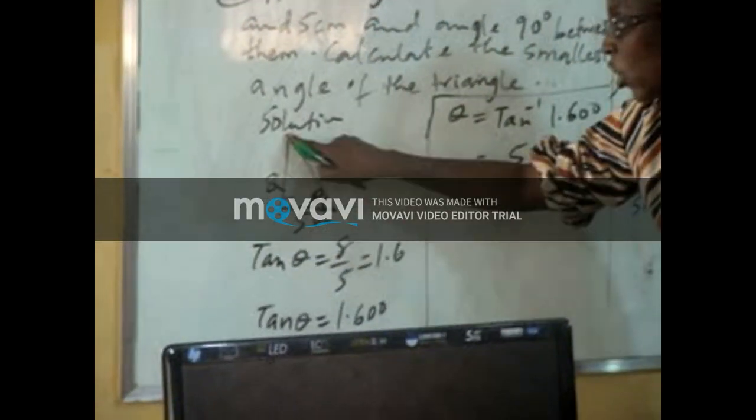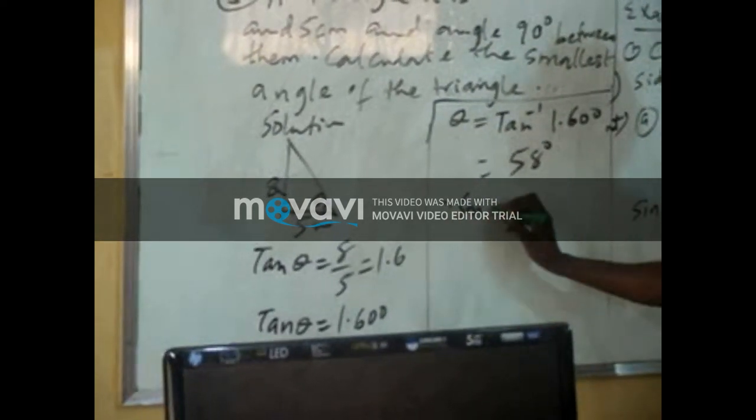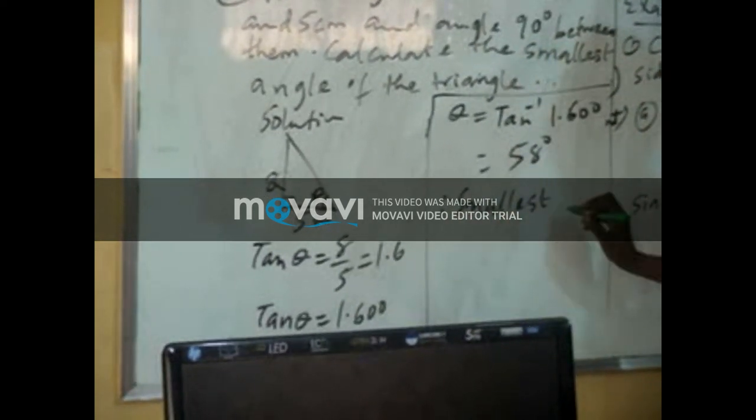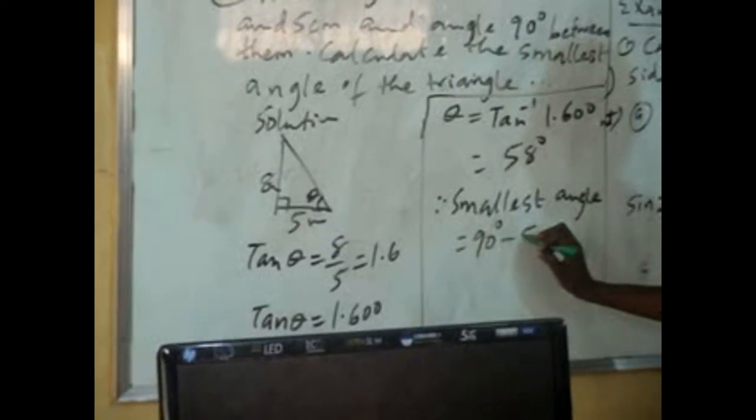This cannot be smallest. This is 90. The addition of this will be most 90. So the smallest, therefore, the smallest angle will now be your 90 degrees minus 58.